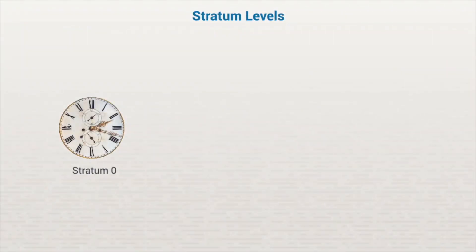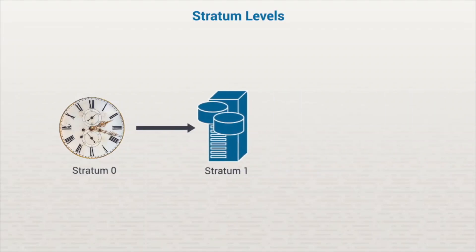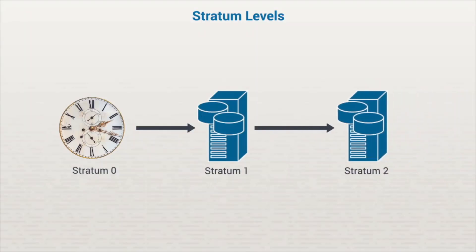Our first level is called stratum zero. This is the authoritative time source that we use to configure the NTP server with. Stratum one is the NTP server that's attached to the authoritative time source. Each subsequent NTP server connected on adds a new stratum level. Because there will always be a slight delay between stratum levels as packets are sent back and forth, each level calculates the amount of time it takes for the NTP packets to travel and adjusts its internal clock so it can maintain an accurate time.